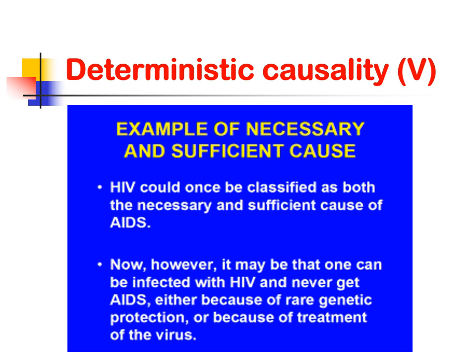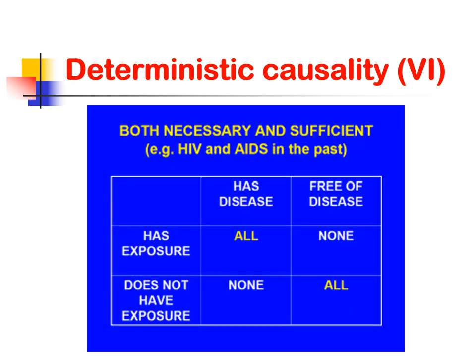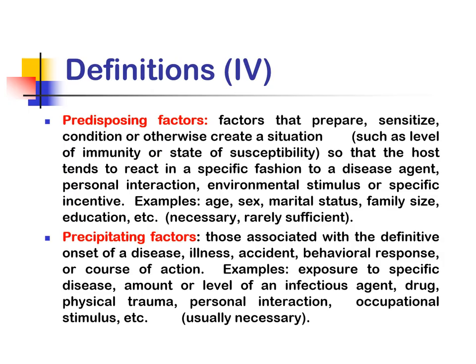Another example: HIV was once classified as both a necessary and sufficient cause of AIDS. However, it is now recognized that one may be infected with HIV and never get AIDS, either because of rare genetic protection or because of treatment of the virus. In the past, with HIV and AIDS, all those with exposure had the disease and none were free of disease; those without exposure had no disease. But this is no longer always the case.